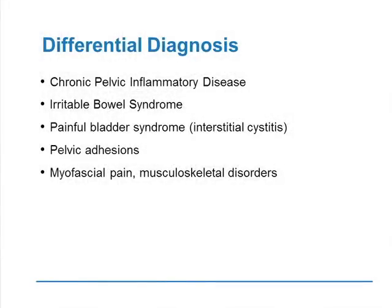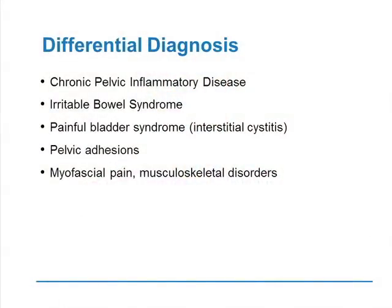The differential diagnosis for patients presenting with these symptoms includes chronic pelvic inflammatory disease, which gives similar symptoms — pain, chronic pain, dyspareunia, dysmenorrhea, and even infertility, typically with a history of sexually transmitted infection. Irritable bowel syndrome is often found in these patients and can be responsible for some symptoms. Painful bladder syndrome such as interstitial cystitis should be considered, as should pelvic adhesions, myofascial pain, and other musculoskeletal disorders, either as primary causes or secondary responses to chronic pain.